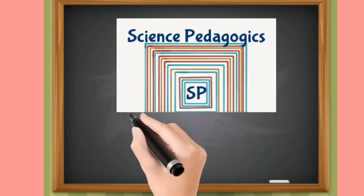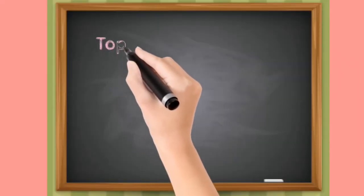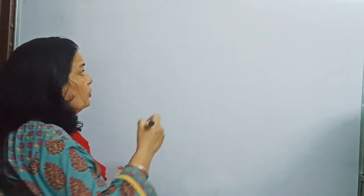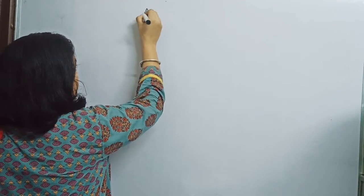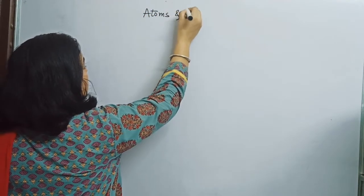Welcome to Science Pedagogics — science made easier. Our today's topic is the Law of Conservation of Mass in chemistry. Hi students, how are you all? I hope you all are fine. Today we are going to start Chapter 3 of your science class, that is Atoms and Molecules. So first I have to write the heading of the chapter: Atoms and Molecules.